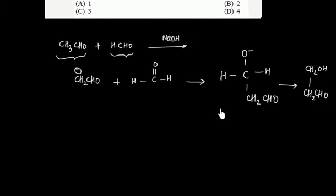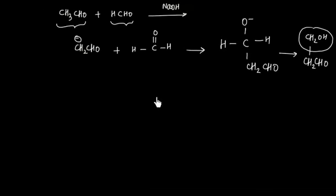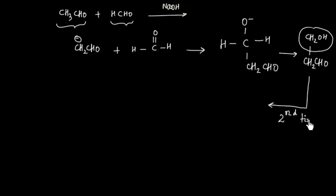So if we do the aldol reaction one time, what has happened is one hydrogen is removed and in its place we have added one –CH₂OH group. This is the first aldol reaction. If we do the same thing a second time, one more hydrogen will be replaced by a –CH₂OH group.